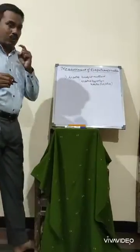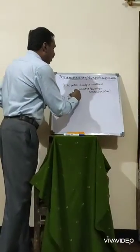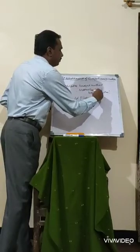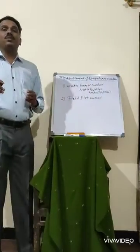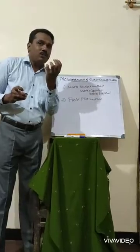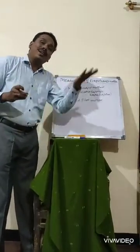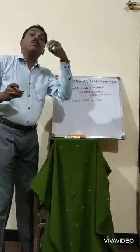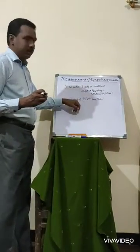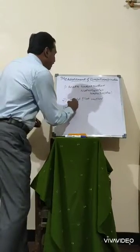The second method is the field plot method. The field plot method depends on irrigated land, a flat surface, or the water consumption in that particular soil.